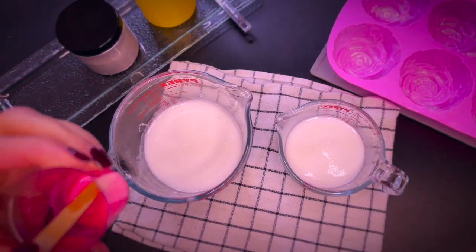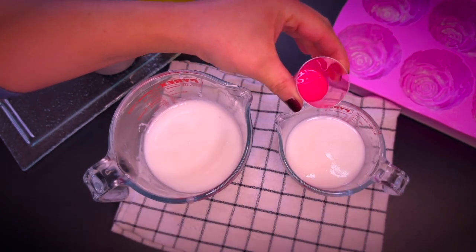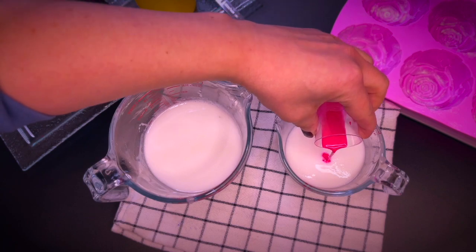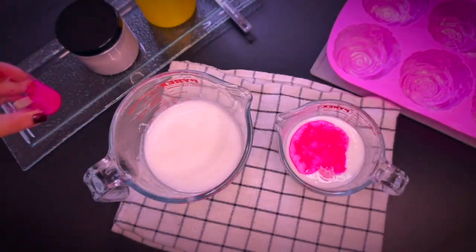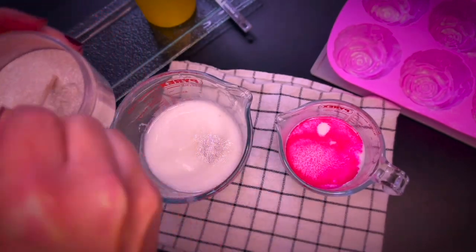Once the base is fully melted, you can go ahead and color it. Here is the premixed electric bubblegum pigment that I will add to the smaller jug. I always start with a little color because I can always add more to achieve the desired intensity.